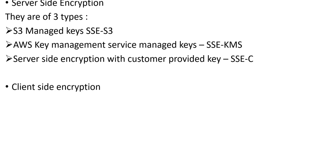The second type is AWS Key Management Service, or SSE-KMS. It is similar to SSE-S3 but comes with additional benefits and separate charges. A separate permission is given for use of an envelope key, which protects the data encryption key and provides added protection against unauthorized access to your objects in S3. The main advantage of SSE-KMS is that it enables an audit trail and logs when the keys were used and who used them.